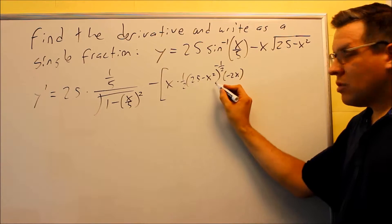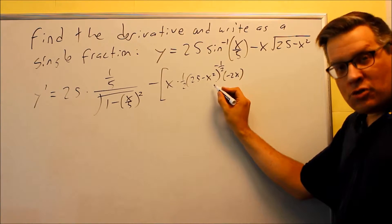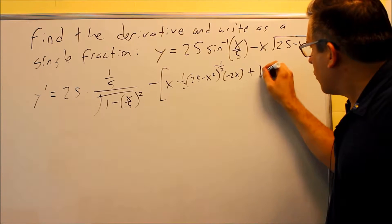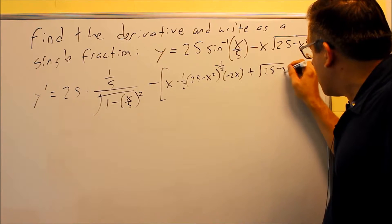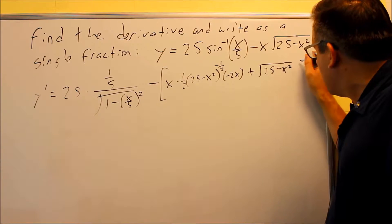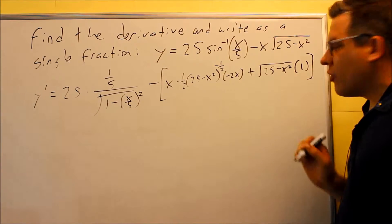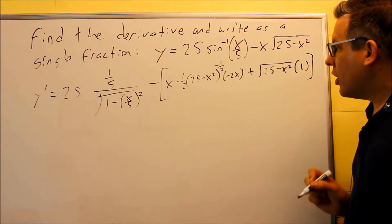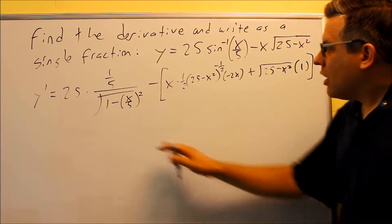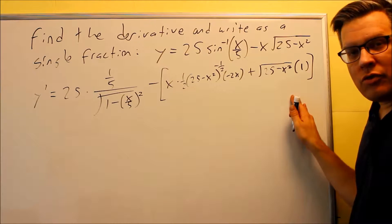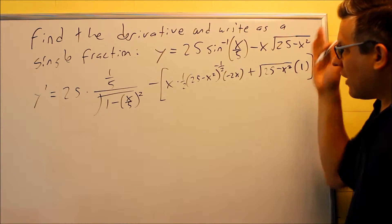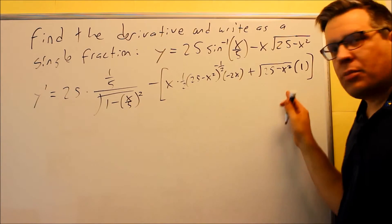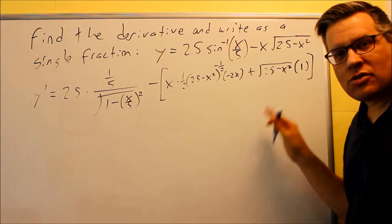So we get: first times the derivative of the second, plus the second thing — which I'll write as √(25 − x²) — times the derivative of the first. The first term is x, so we just get a 1 there. That's your derivative. Now, because it says we have to write this as a single fraction, we need to do a lot of cleanup on this to get our answer down.